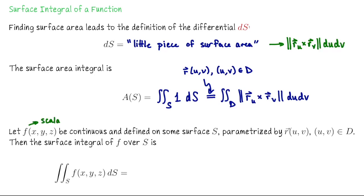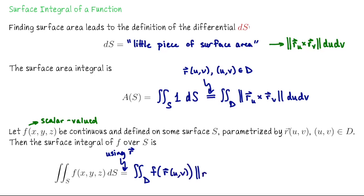Suppose we have some scalar-valued function of three variables F of X, Y, and Z, which is continuous and defined on some surface S, for which we have a parametrization R of U and V, with parameters U and V coming from some domain D in R². Then the surface integral of F — integrating over that surface — in its general form, we write it as the double integral over S of F DS. Computationally, using our parametrization, we evaluate this as the double integral over D of F of R(U,V) times the length of the cross product R_U cross R_V, dU dV. I like to think of this as analogous to how we set up scalar line integrals — so this is a scalar surface integral.